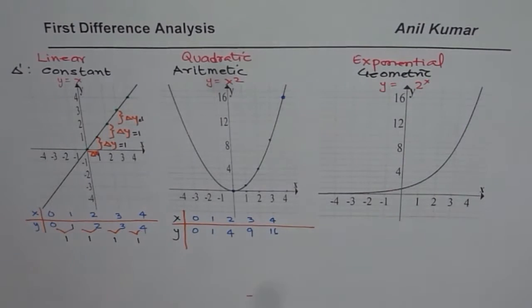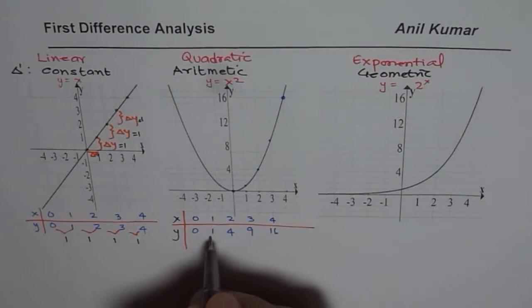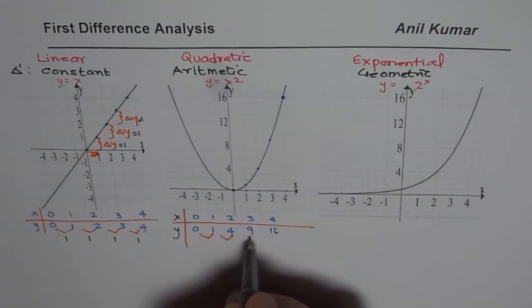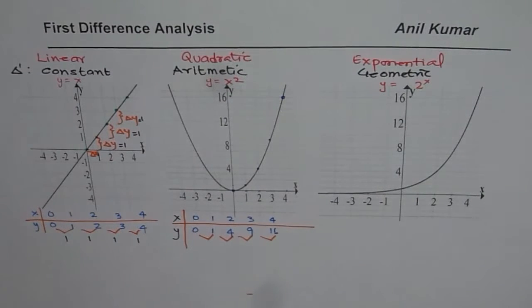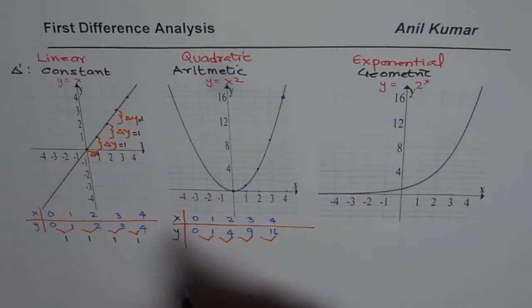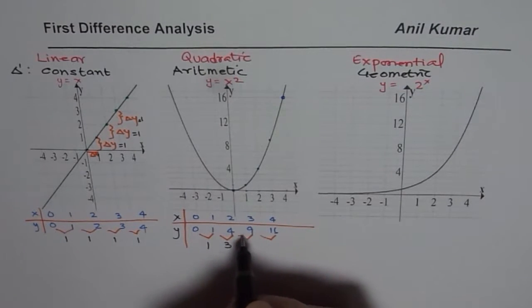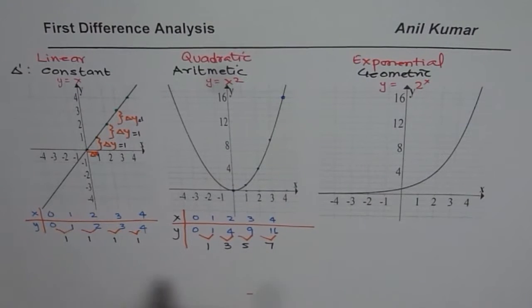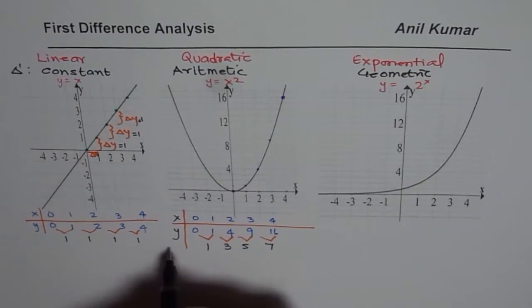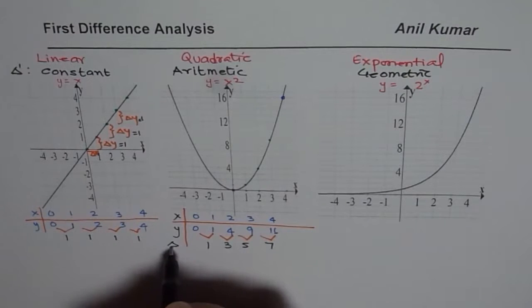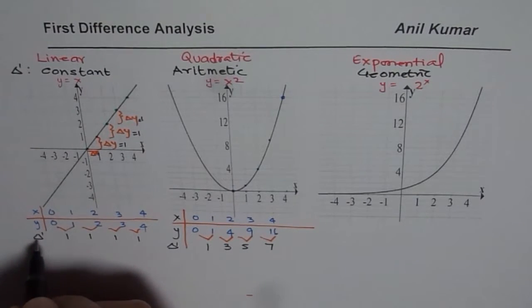Now if you calculate the first difference, that is 1 minus 0, 4 minus 1, 9 minus 4, 16 minus 9, what do you get? 1 minus 0 is 1, 4 minus 1 is 3, 9 minus 4 is 5, and then you get 7. So this first difference, this is our first difference. That is delta 1. I am calling delta 1 as the first difference.